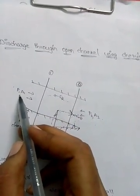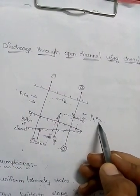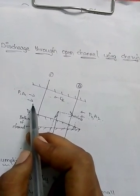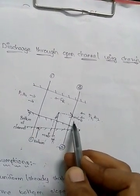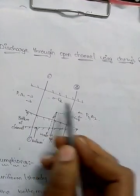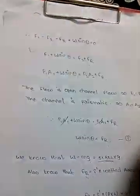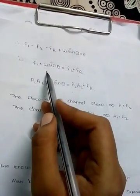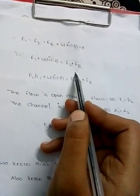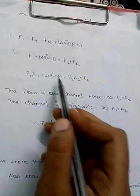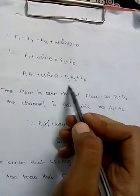Here, F1 is P1·A1 and F2 is P2·A2. P1 acts in the positive x direction and W·sinθ also acts in the positive x direction. We take the frictional force F4 as negative in this direction.